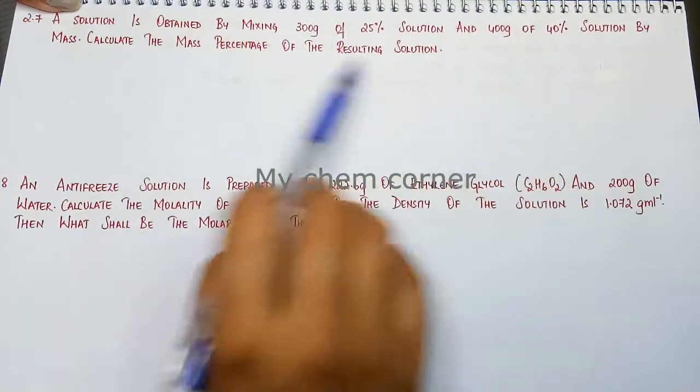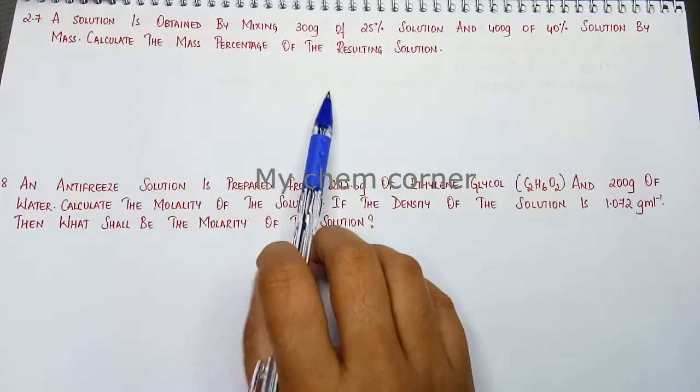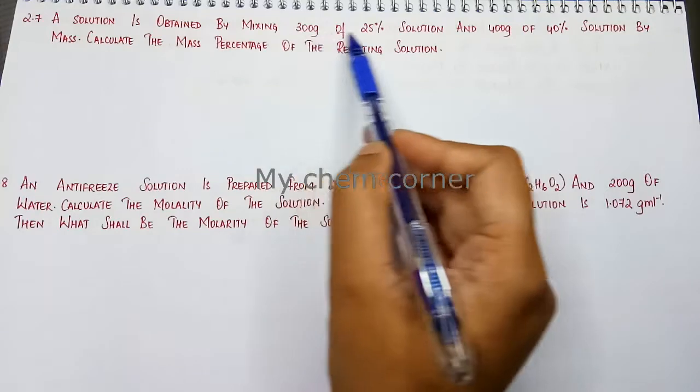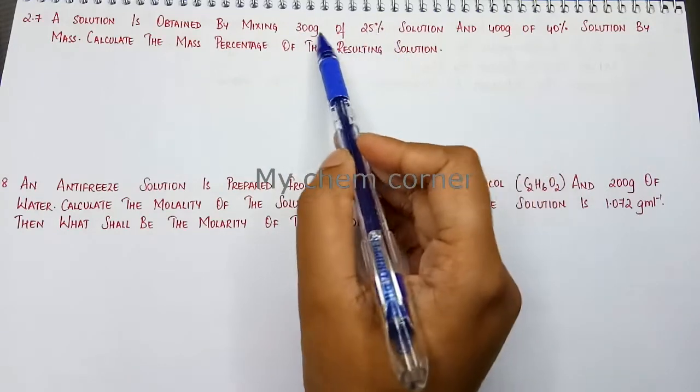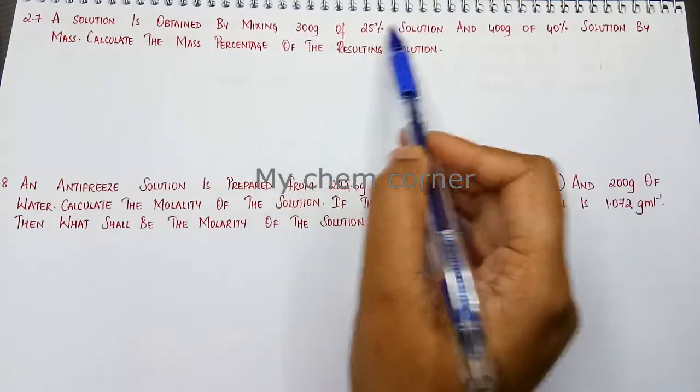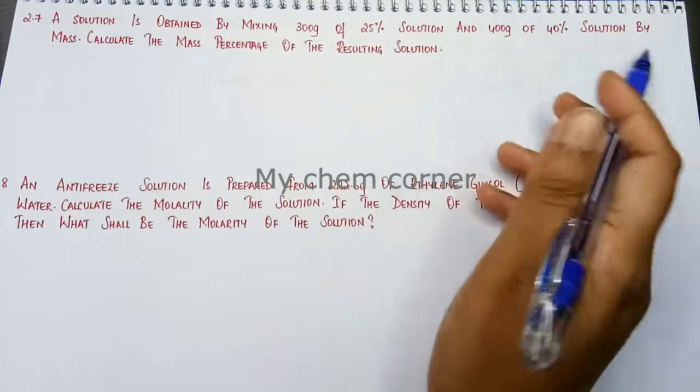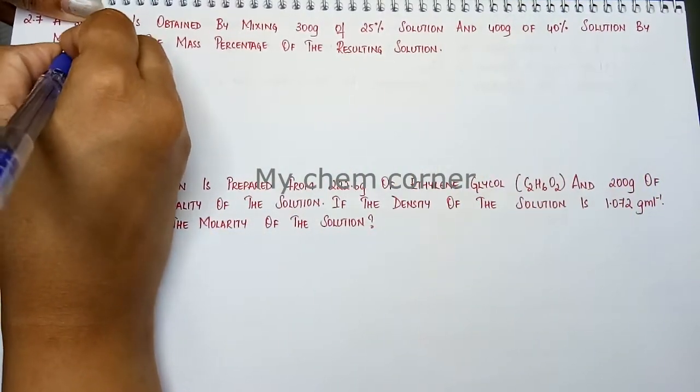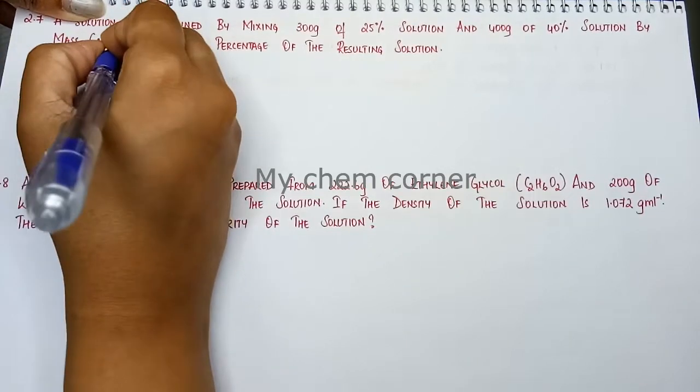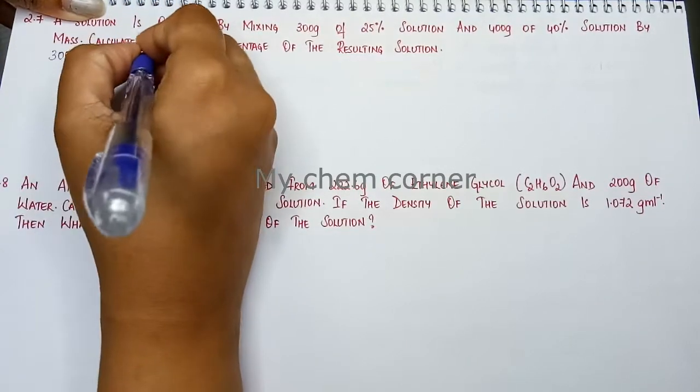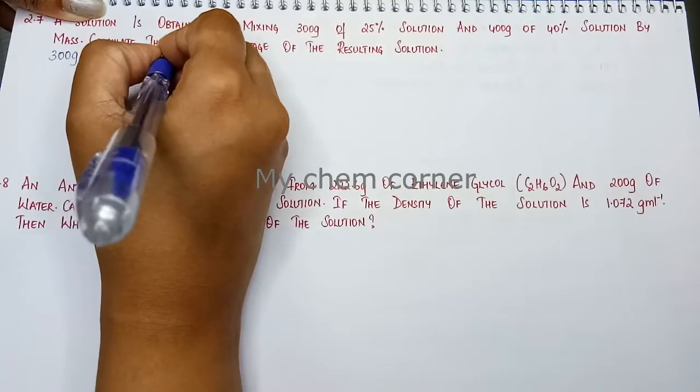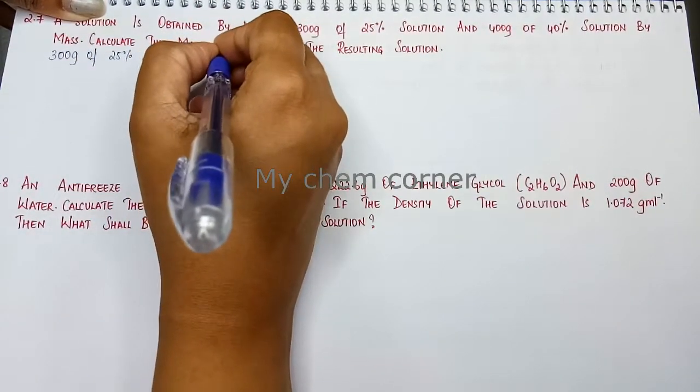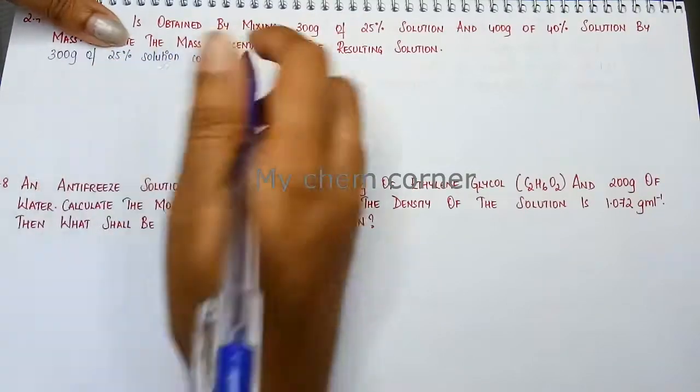Before we move into trying to find out mass percentage, let's see what is the meaning of this 25% - 300 grams of 25% and 400 grams of 40%. So you can write here that 300 grams of 25% solution contains, since it's percentage, it is 25 by 100 into 300 grams.